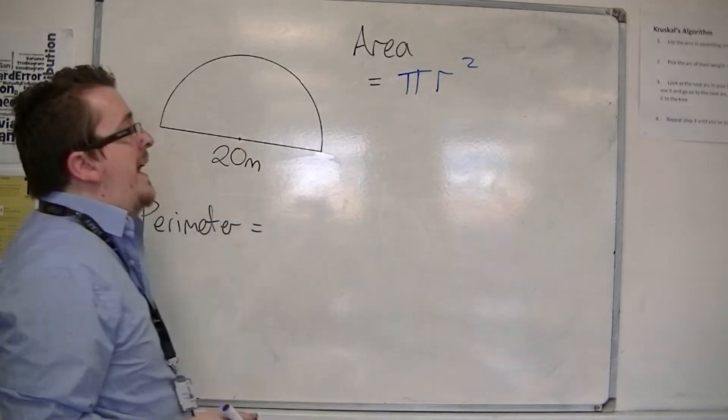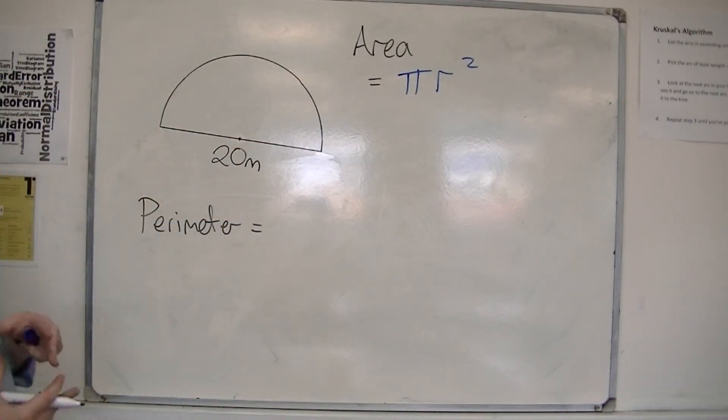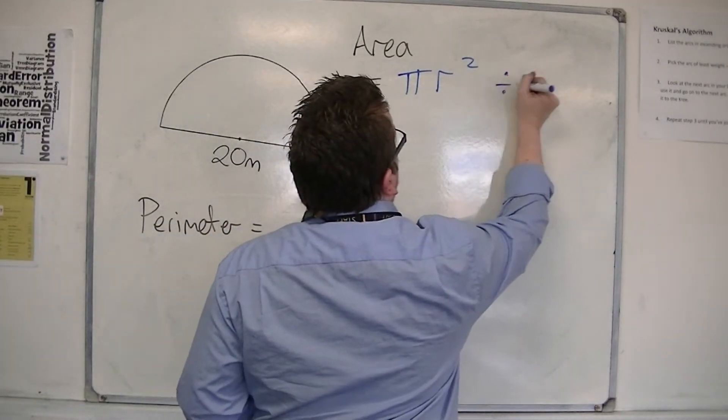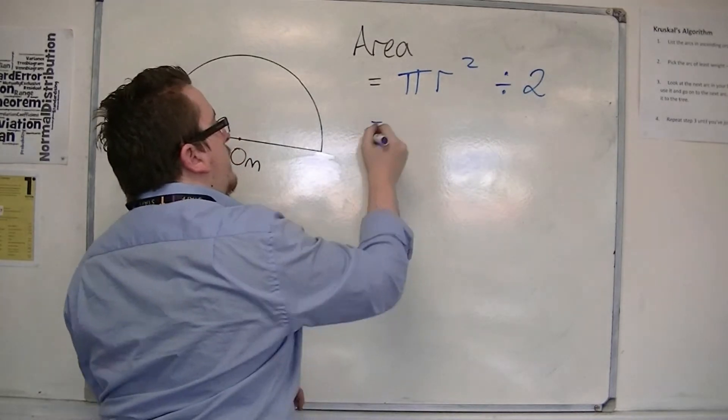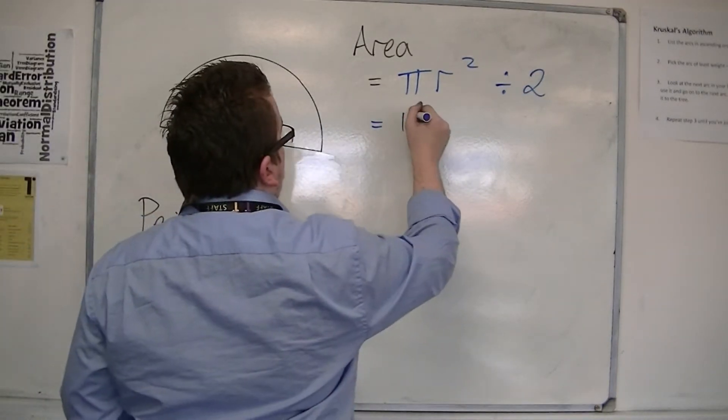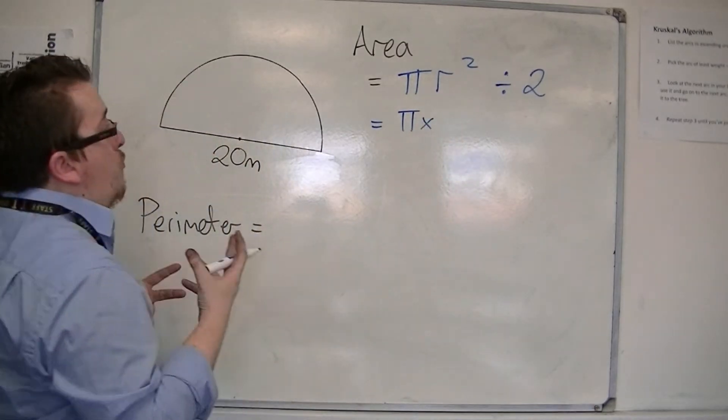Pi r squared is the area for the whole circle. So if I only need half of it, then I'm going to divide that answer by 2. So that would be pi times the radius squared.